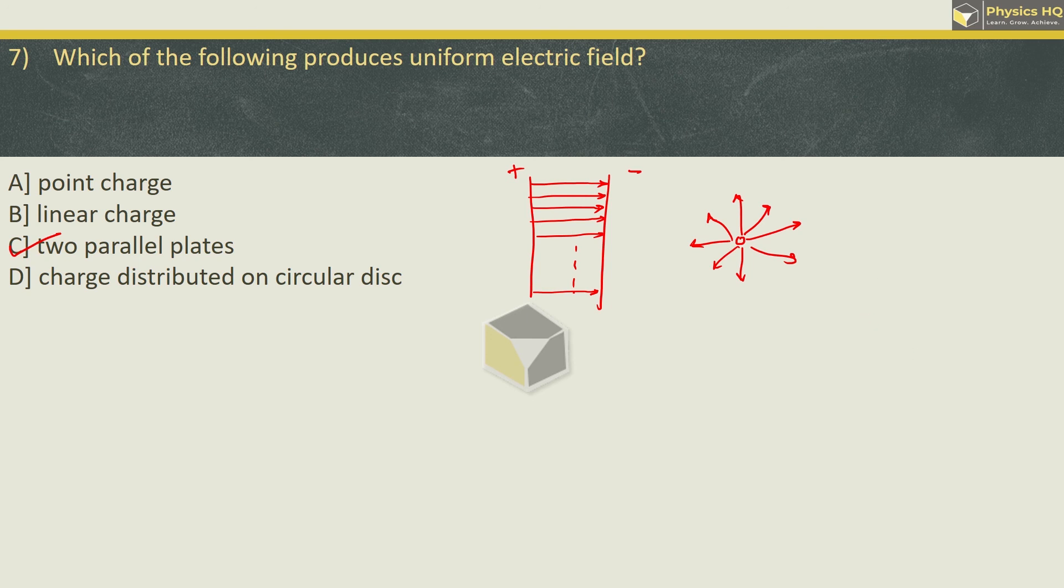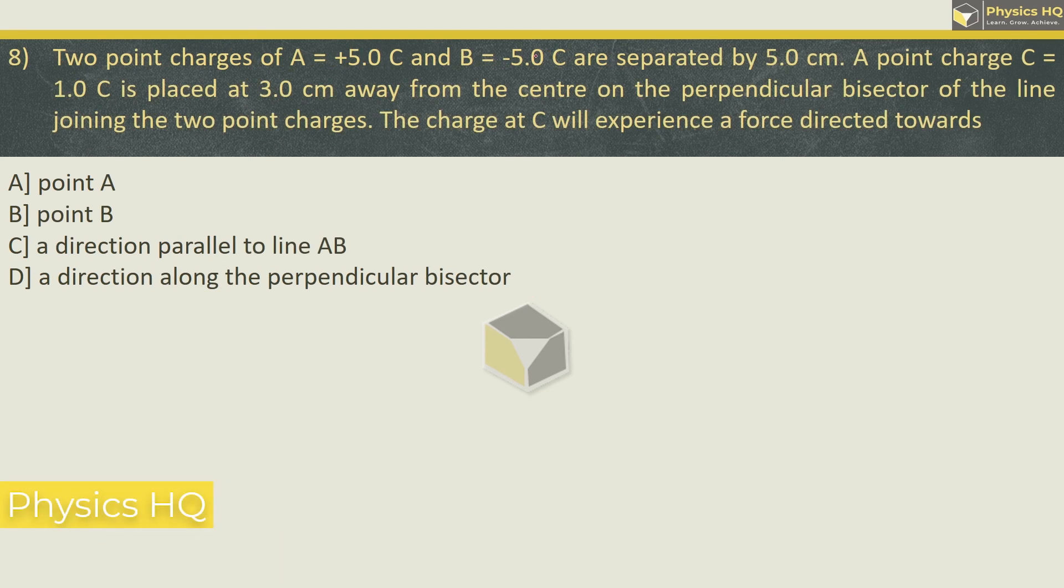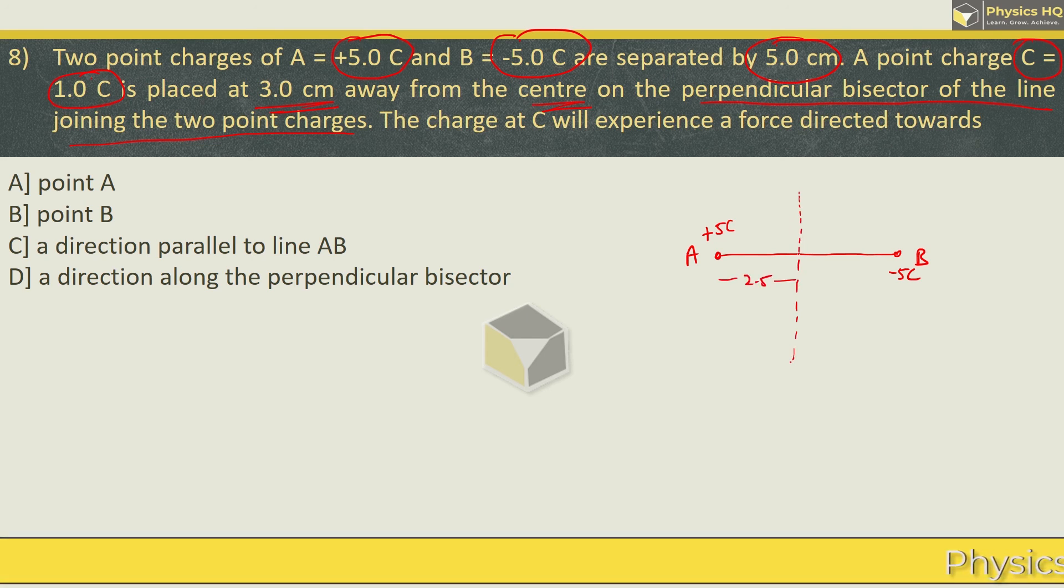Let us check out the next MCQ. Two point charges: A of charge equal to plus 5 coulomb, B equal to minus 5 coulomb, are separated by 5 centimeter distance. So you basically have a dipole formed. A point charge C which is of 1 coulomb is placed at 3 centimeter away from the center on the perpendicular bisector of the line joining the two charges. So if these two charges have a perpendicular bisector somewhere in between at a distance of 2.5 cm, it is at a distance of 3 centimeter on the top. Let us say this height is 3 centimeter. Here is the charge C which is 1 coulomb.